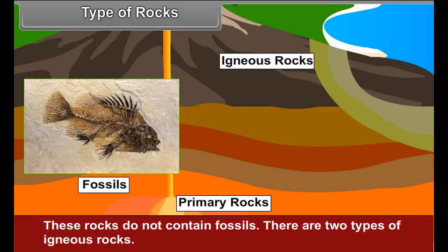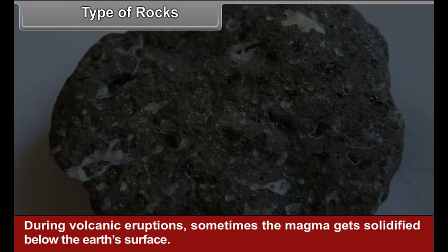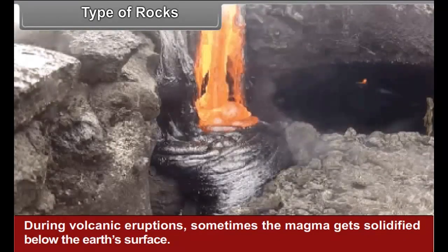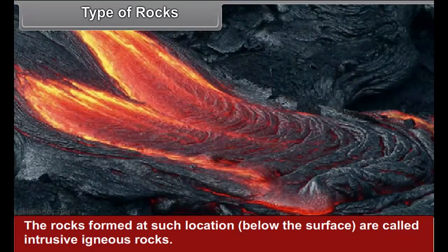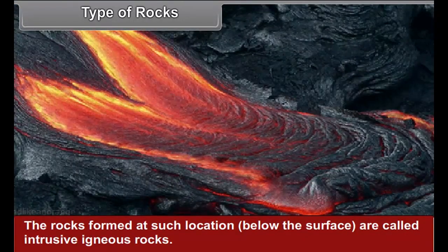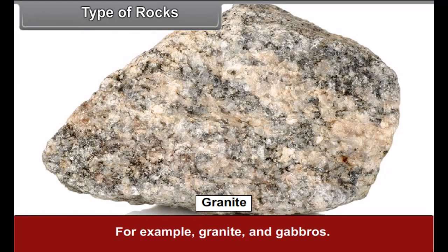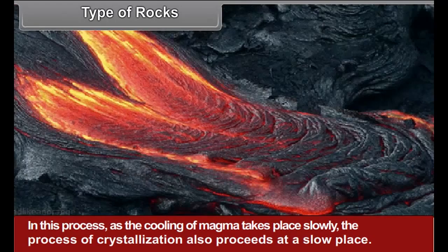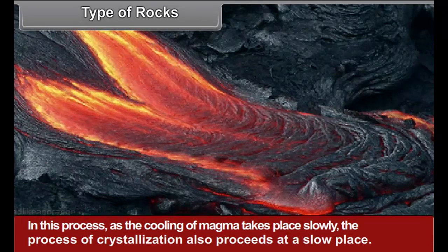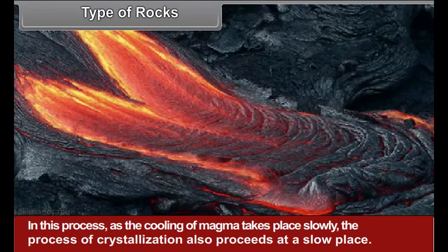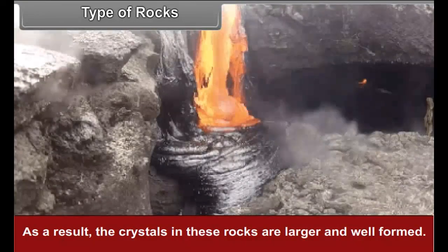There are two types of igneous rocks. Intrusive igneous rocks: during volcanic eruptions, sometimes the magma gets solidified below the Earth's surface. The rocks formed at such locations below the surface are called intrusive igneous rocks — for example, granite and gabro. In this process, as the cooling of magma takes place slowly, the process of crystallization also proceeds at a slow pace. As a result, the crystals in these rocks are larger and well formed.